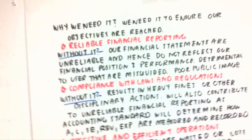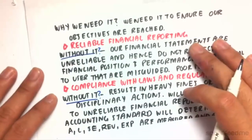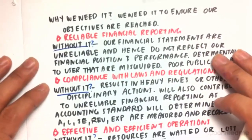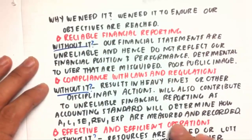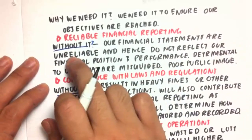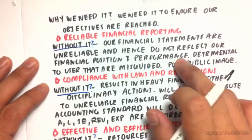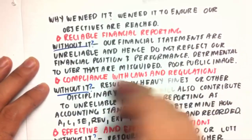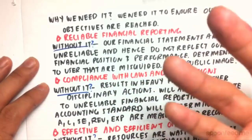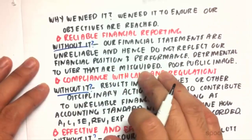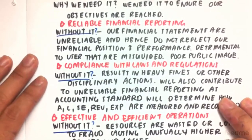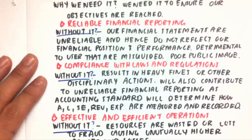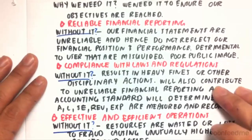So why would we need it? We need it to ensure our objectives are reached. If we didn't have these internal controls — so without reliable financial reporting — our financial statements are unreliable and they don't reflect our financial position and performance. It becomes hard for our users to determine if they're right or wrong. They become misguided, and as a result we have a poor public image. It looks like our firm isn't honest and it just reduces our market value.